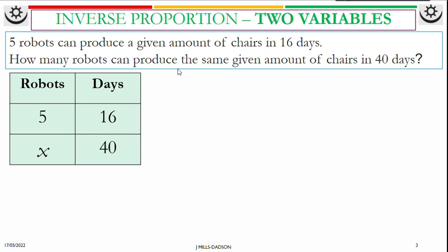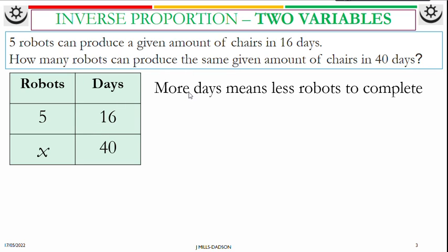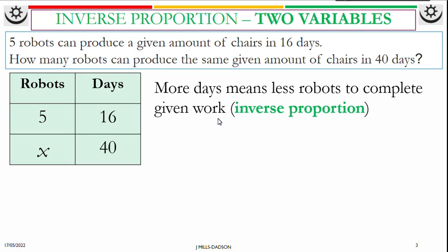Let's make sense — why is it inverse? More days means less robots to complete the given work, because if you have more robots, you spend less days. So if you are spending more days, it means you don't have enough robots. So the number of robots and days are inversely related — this is inverse proportion.